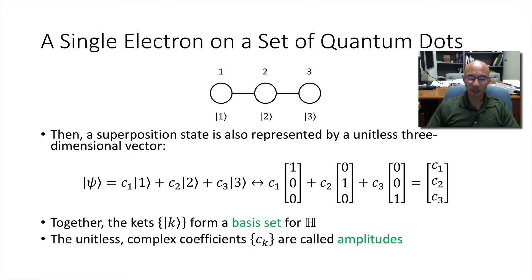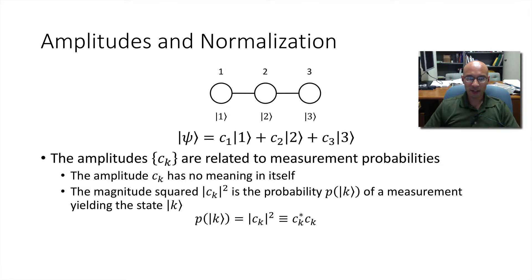These coefficients, as I noted, are complex, and we refer to them as amplitudes. So let's talk about what the amplitudes mean. So these amplitudes are related to the measurement probabilities. Now, I have to point out that amplitude C sub K has no meaning in itself. But the magnitude of C sub K squared is the probability that we'll measure the system in state K.